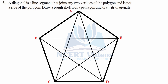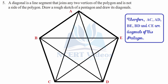BC and BA cannot be drawn as diagonals. From C, diagonal CA is already drawn, so we draw CE. From D, both DB and DA are already connected. The diagonals of this pentagon are: AC, AD, BE, BD, and CE. That was question five.